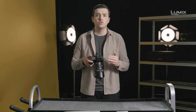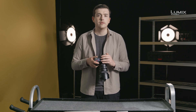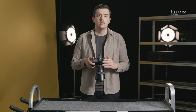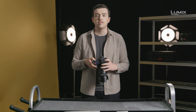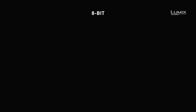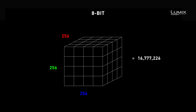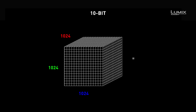But what does 10-bit and 4:2:2 really mean? 10-bit, or the color depth — also called bit depth — is a measure of how many individual colors the camera is capable of recording. 8-bit color depth contains 256 individual colors for each of the red, green, and blue channels, while 10-bit color contains 1024 individual colors for each RGB channel.